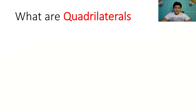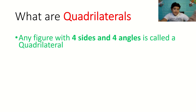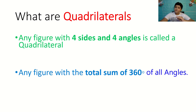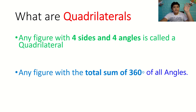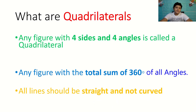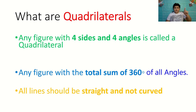So let's look at quadrilaterals. What are quadrilaterals? Any figure with four sides and four angles is called a quadrilateral, with a total sum of angles equal to 360 degrees. For example, if all four angles are 90 degrees, it would be a quadrilateral. All lines should be straight and not curved — the lines can be tilted, but they should not be curved.